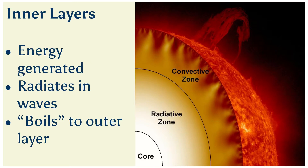The solar interior is separated into regions by different processes that occur there. Energy is generated in the core, the innermost 25%. This energy diffuses outward by radiation, mostly gamma rays and x-rays, through the radiative zone.